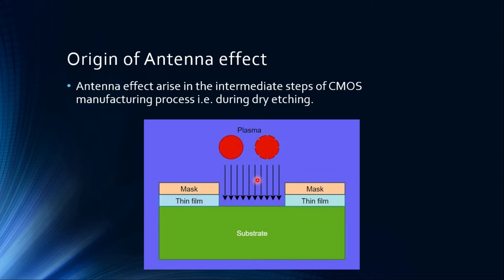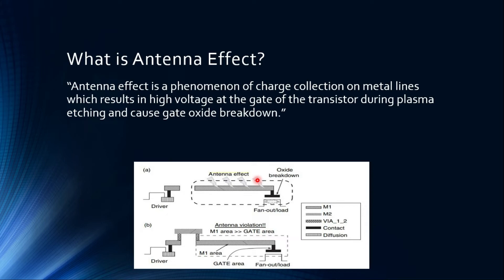But the problem with this technique is plasma is used to etch. This plasma contains free electrons, free radicals, ionized molecules, and many other charged particles, and these become a problem known as antenna effect. So what is antenna effect? Antenna effect is a phenomenon of charge collection on the metal lines which results in high voltage at the gate of the transistor during plasma etching and causes gate oxide breakdown. When I say plasma etching, it can be a combination of plasma etching and sputtering.